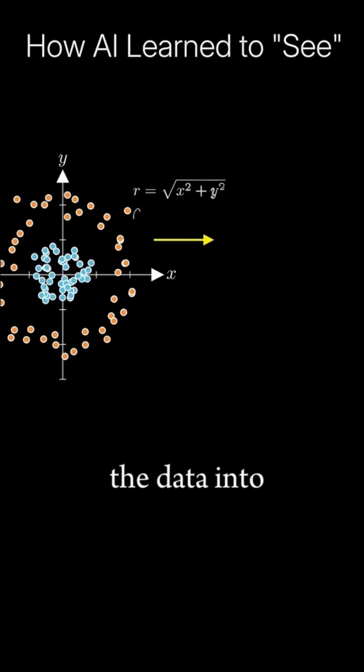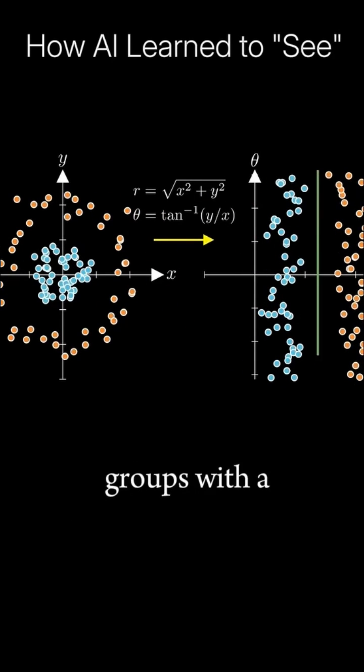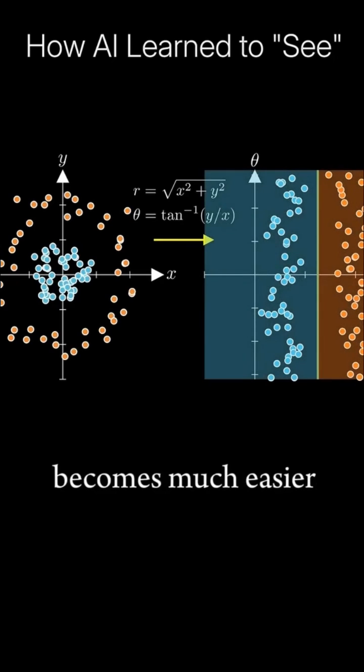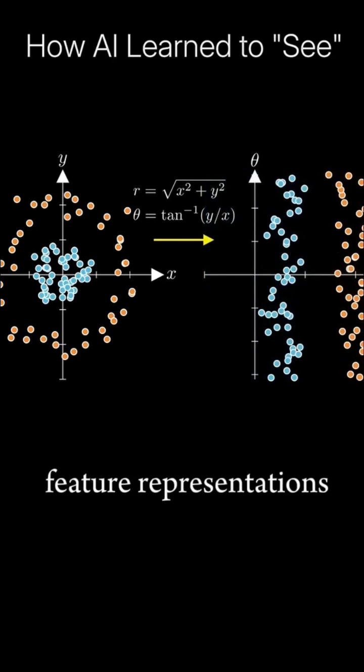Now let's transform the data into radial coordinates. By changing our perspective on the data, separating the two groups with a straight line becomes much easier. This example highlights the importance of having good feature representations.